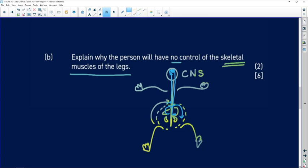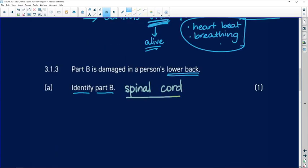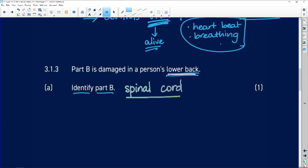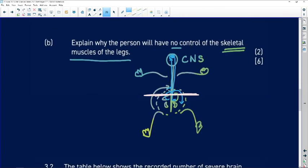So what we're saying now is: what happens if the lower part of the spinal cord was damaged? Remember it said it's damaged in a person's lower back. So now this means that anything below, any organs below the point of damage, are either not going to be able to send messages up to the brain or receive messages from the brain. That highway is now blocked.